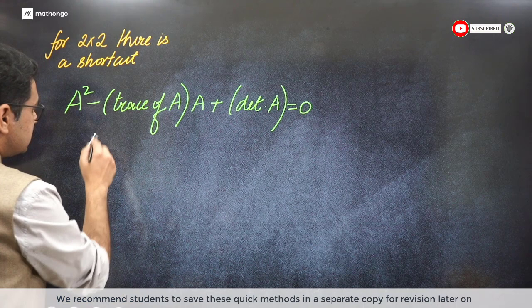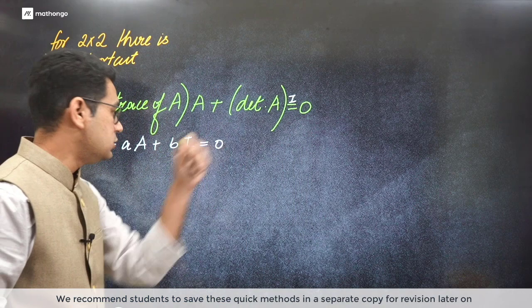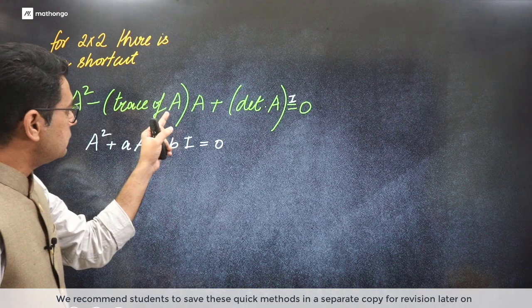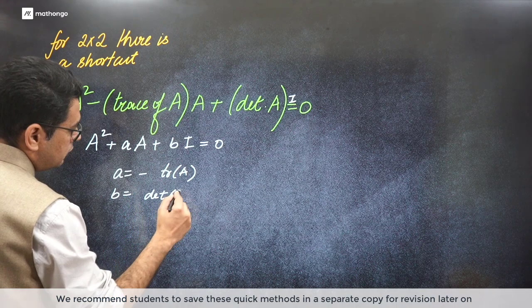So the characteristic equation was A square plus A times A plus B times I - I made a mistake, the identity matrix should be here. So A square plus A plus this becomes A square minus trace of A times A plus determinant of A times I. So that means this A comes out to be minus trace of A matrix, and the value of B is the determinant of A.